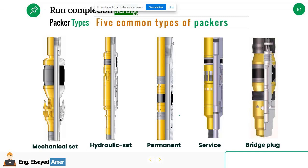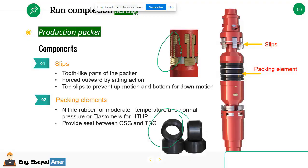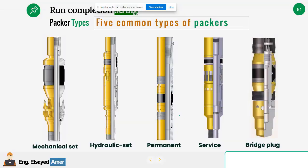And what about the other one, the retrievable? You can use it for other jobs once you're done with the current one. Yes, but we can install it at first run. We can run in a hole with a retrievable packer, then install in the well, in the cased hole.